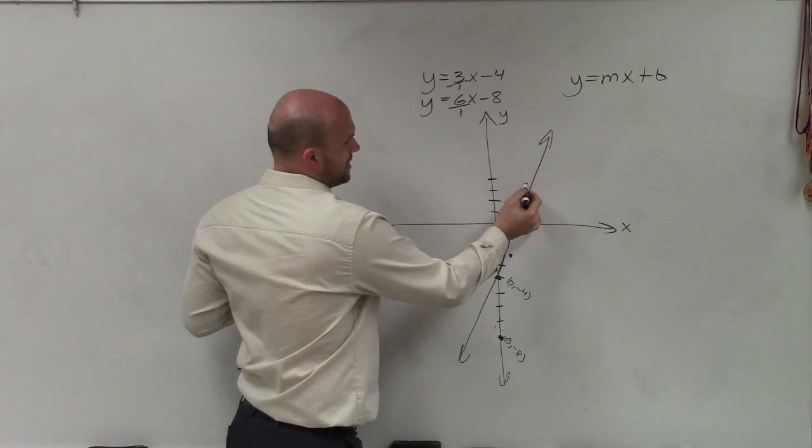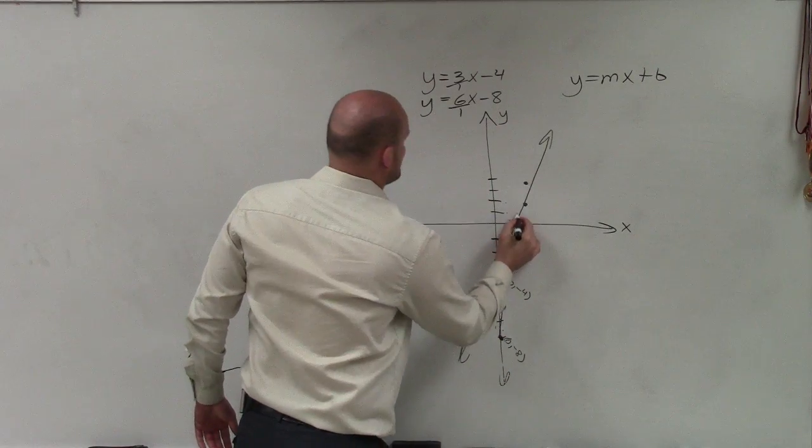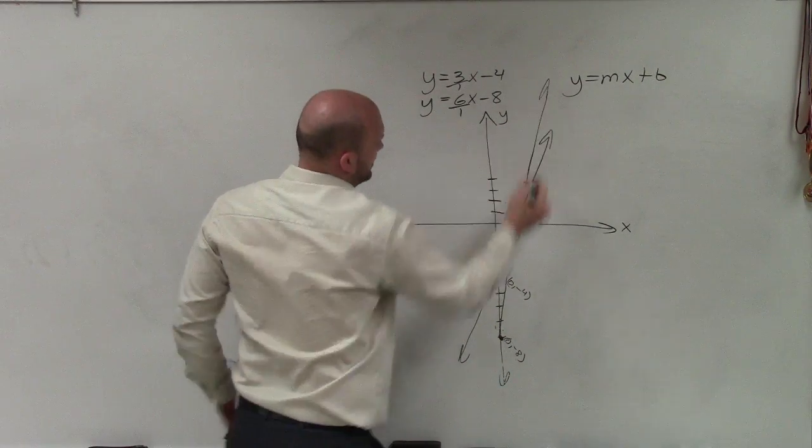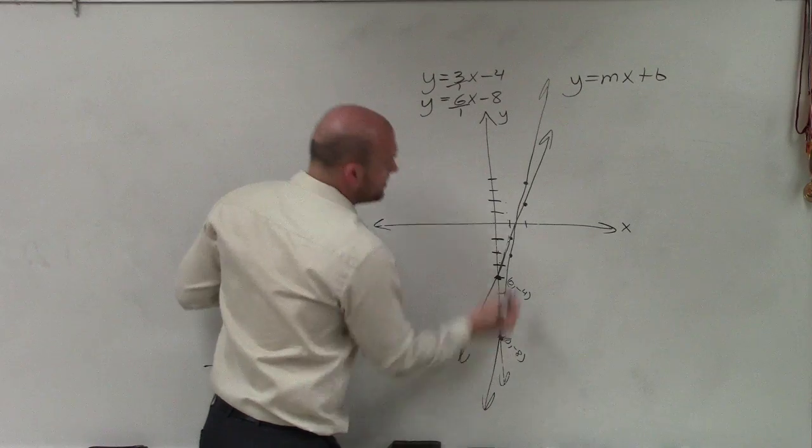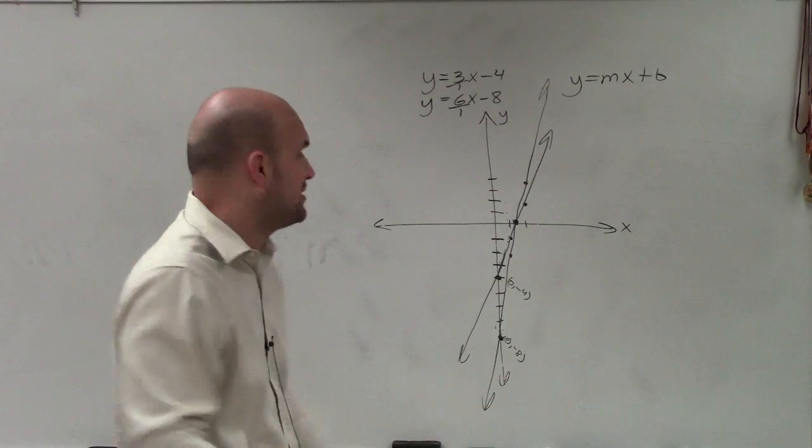And then over 1 again, OK? And when doing that, what we can see is these do cross. And even though I know I can't really draw a great line, but they do cross at some point between 1 and 2. And where exactly is that point going to be?